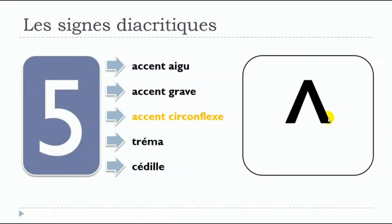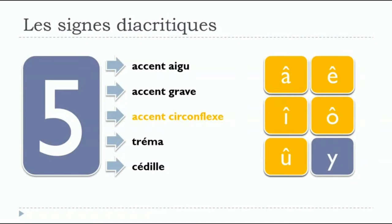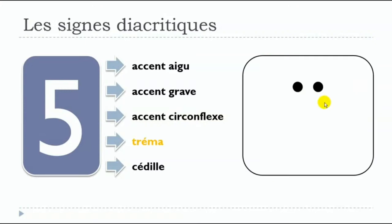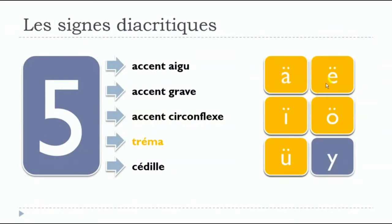After that, you've got l'accent circonflexe — like a little roof or little hat — and it will come on top of A, E, I, O, and U. Then tréma, just like two little dots, and it will also come on top of A, E, I, O, and U.